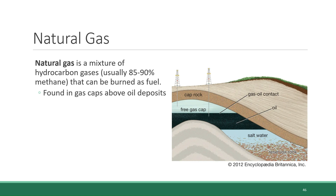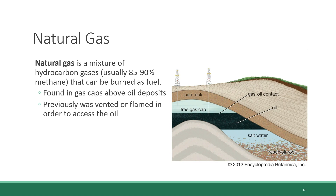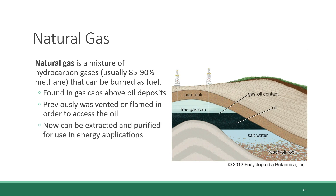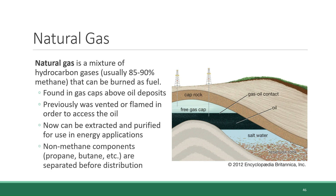As we learned in a previous section, natural gas is found in gas caps, which are pockets located above oil deposits. Natural gas used to be just vented or flamed when drilling for oil, meaning it was released into the atmosphere or burned to get rid of it in the process of obtaining the oil. But now the technology exists that allows it to be collected and purified for energy applications.